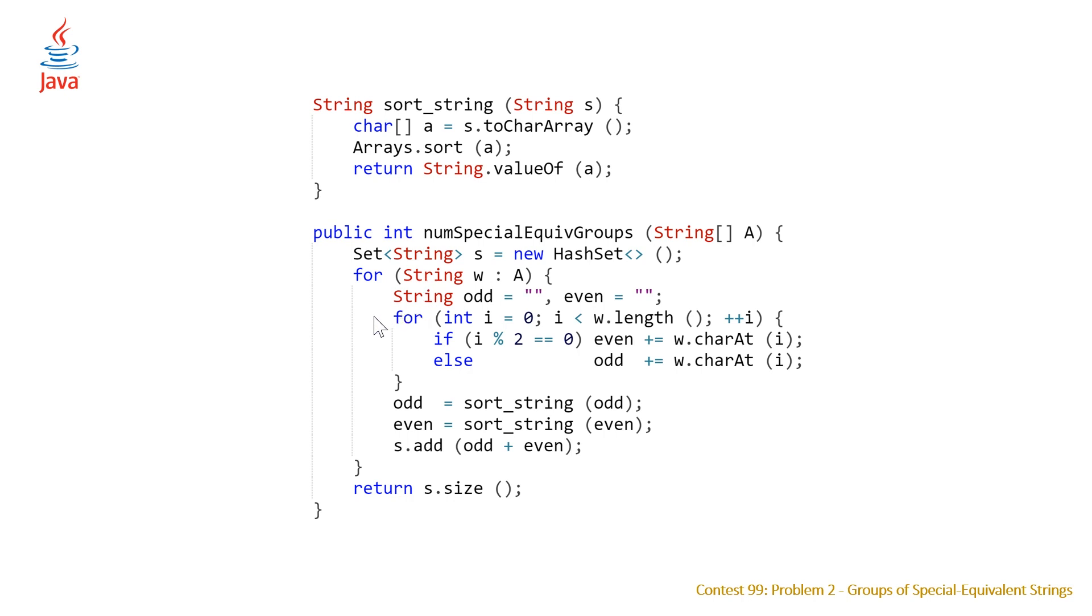We declare our two strings, we have to initialize them to be empty, they don't have default initialization. Then we have the same for loop where we add the characters to the even string or the odd string based on whether or not the index is even or odd. Unfortunately we can't use bracket operators here, we need to use the charAt method for the string class. Then we call our sortString on both odd and even and then we do a call of our add method into our hash set. At the end we just return the size of this set.